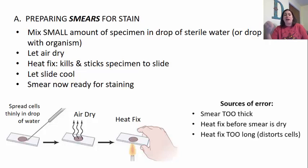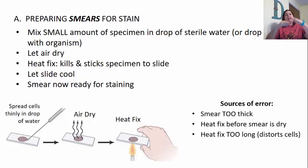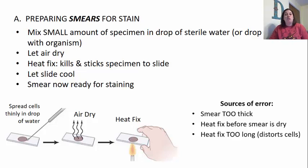There are several sources of error when preparing smears. One is that the smear could be too thick — too many organisms on the slide stacked on top of each other, preventing light from coming through to see details. Another source of error is heat fixing the smear before it's completely dry, which could alter the organism's structures. You also don't want to heat fix it too long, as the cells can get distorted and misshapen, making it hard to identify what kind of organism you're looking at.